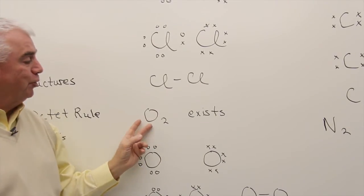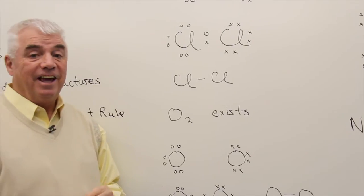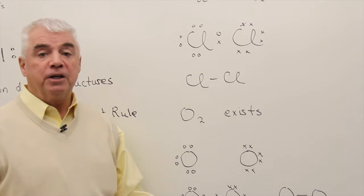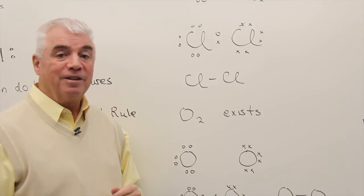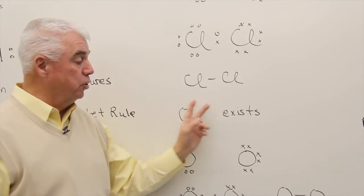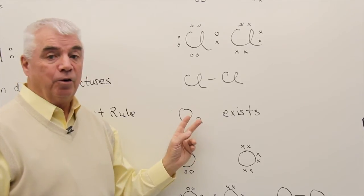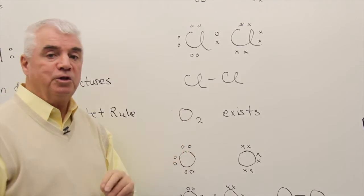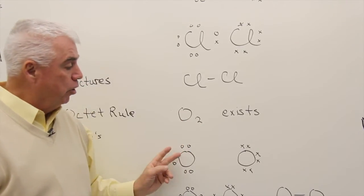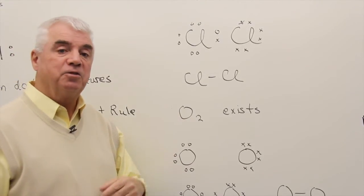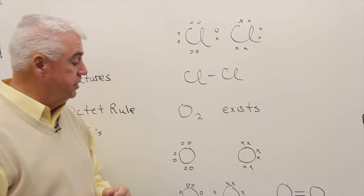Oxygen, O2, exists. And whenever something exists in nature, chances are it's pretty stable. And with covalent compounds, chances are awfully good that it obeys the octet rule. So let's see if we can work out the octet rule using the Lewis structure for oxygen and see why O2 exists as two atoms bonded together.